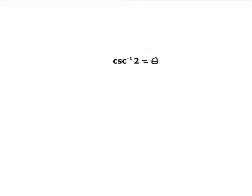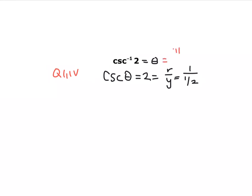This one's a little different — you just have cosecant inverse of 2. We're solving for an angle θ such that the cosecant of θ is 2. Cosecant inverse exists in quadrants 1 and 4. Cosecant is r over y, so to match the unit circle, this is 1 over 1/2. What angle in quadrants 1 or 4 has a y-coordinate of 1/2? That would be π/6.